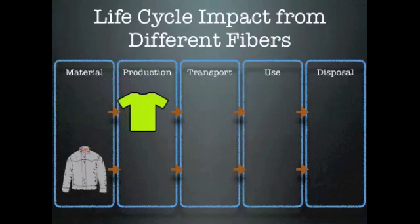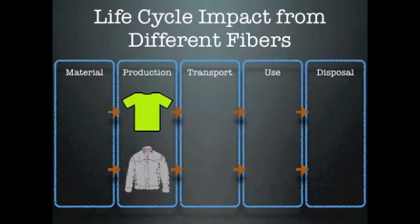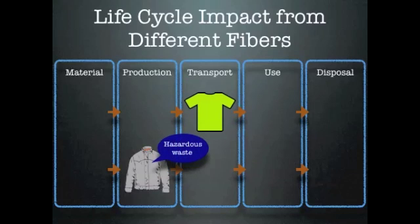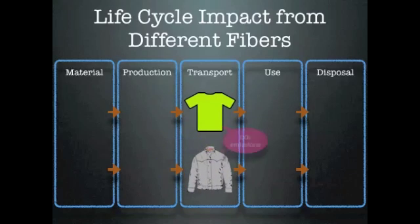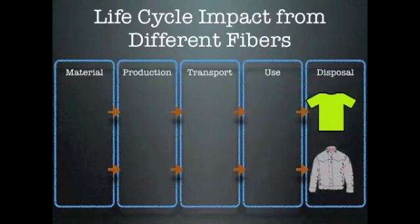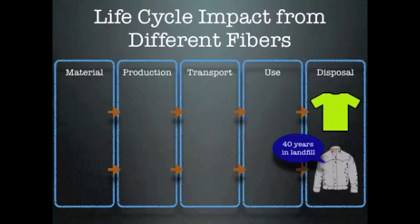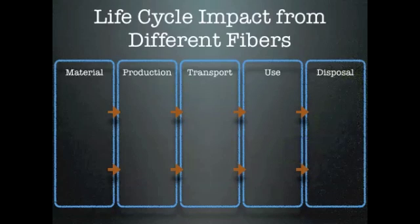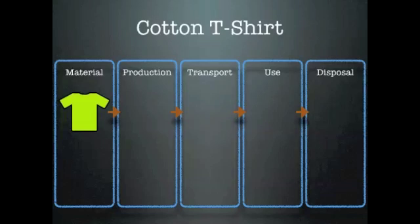Now it's also important to examine each phase in the life cycle and to examine products with different fibers. So here we'll use two examples: a cotton t-shirt and a polyester jacket. Each will have their distinct environmental impact as you can see right here. First, let's start with the cotton t-shirt and look at what processes are involved in each phase of its life cycle.